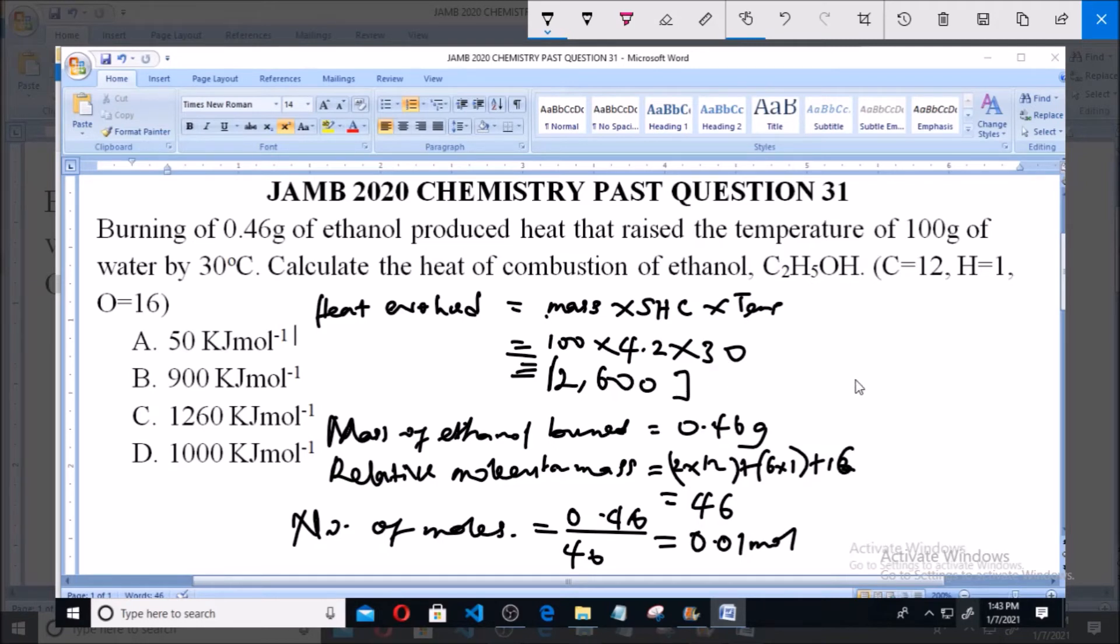Now if 0.01 mole of ethanol when combusted produces 12,600 joules, what will be the quantity of heat produced when 1 mole of ethanol is combusted?